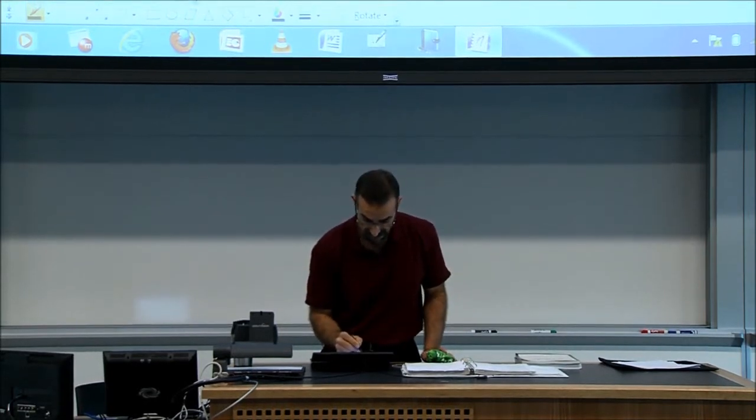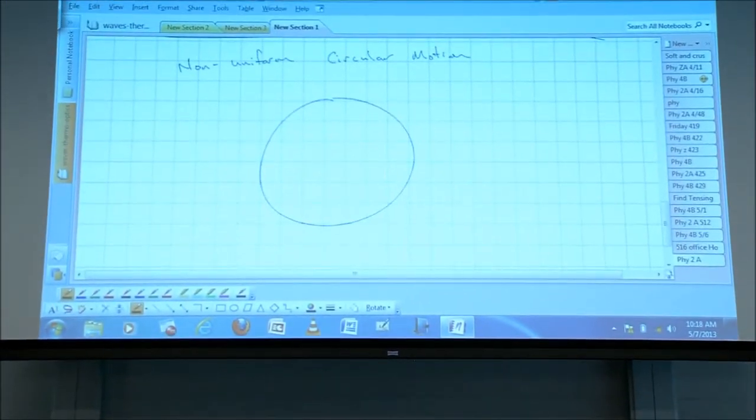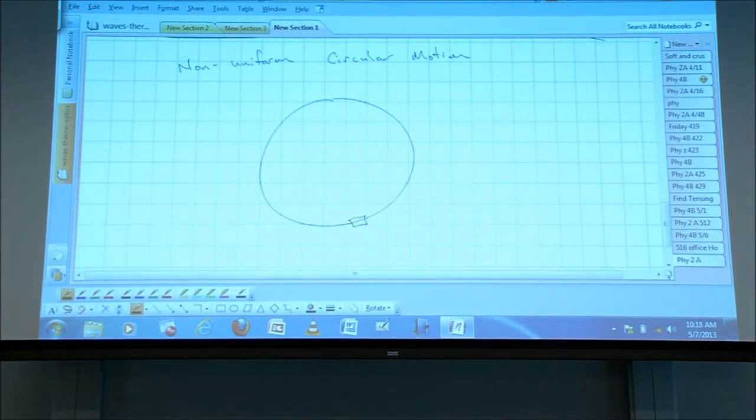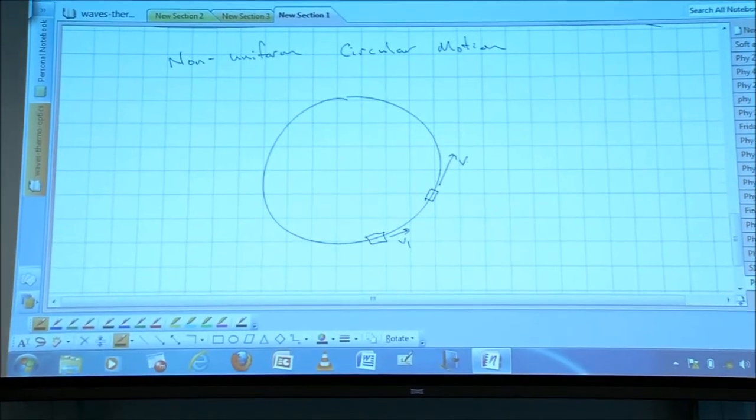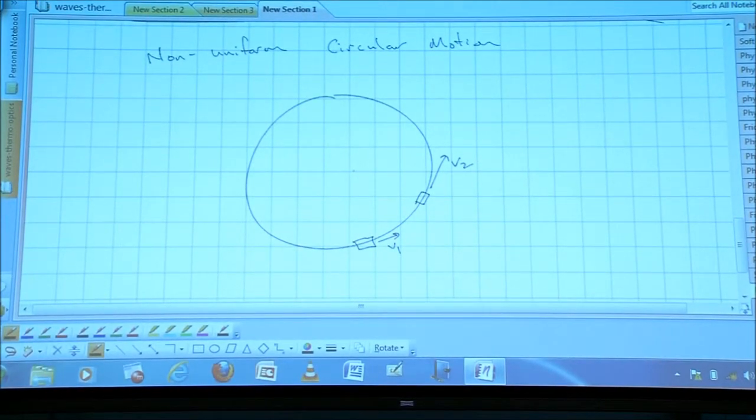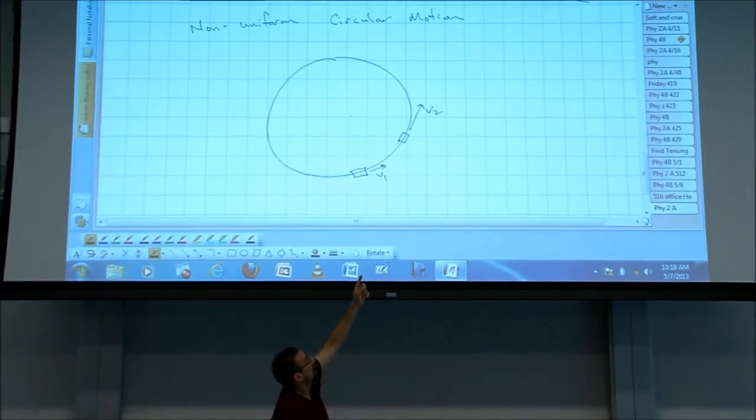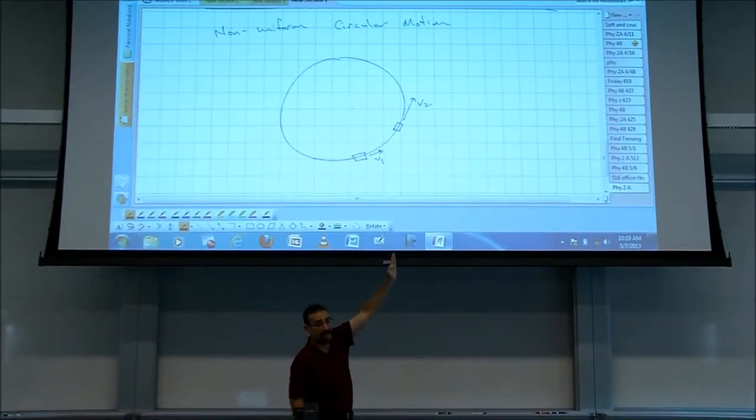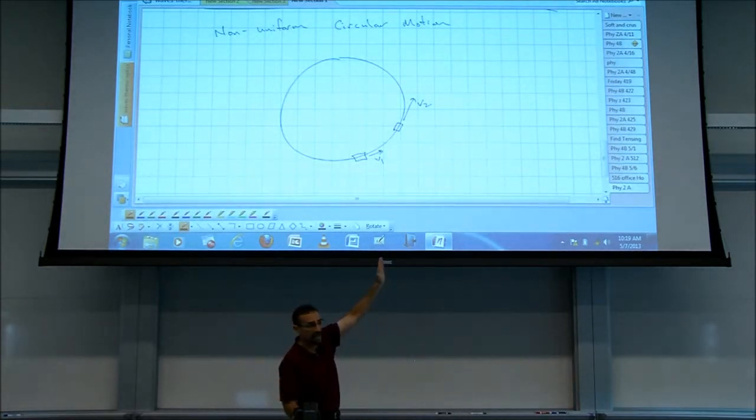So let's take an example here, just something moving around a circular track. So in this case, what happens? At time one, we've got velocity V1. And at time two, we have velocity V2. It's a different direction now. It's moving along a curved path. And I tried to draw that arrow longer. It's now going faster.